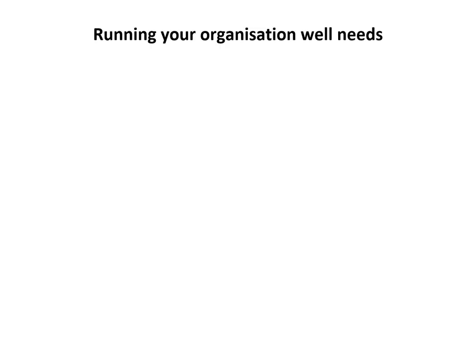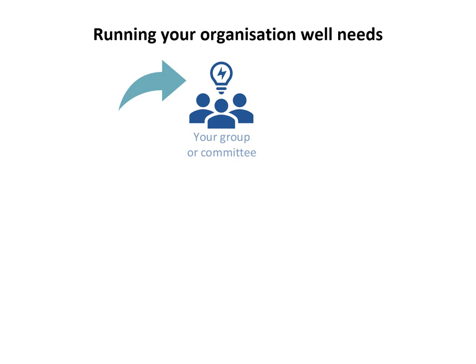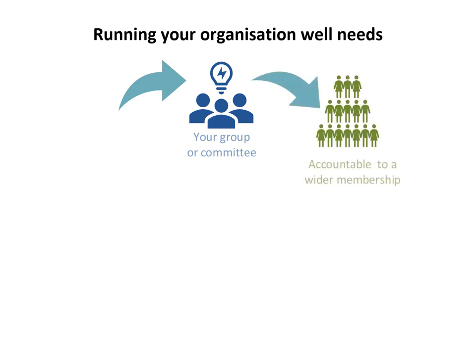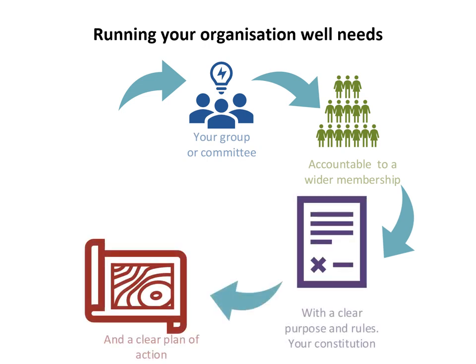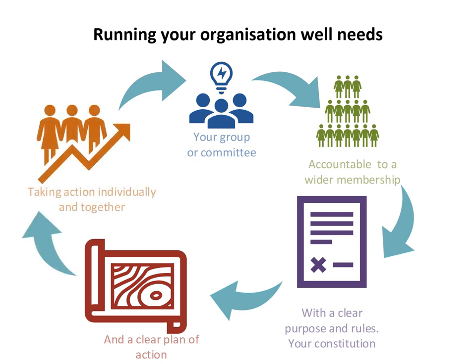In summary, running your organisation well needs a group or committee who are willing to work together to get things done and who are accountable to their wider membership, taking responsibility for their decisions and actions, and enabling dialogue with their community. You'll need a clear purpose, a set of rules, and a clear plan of action — Module 4 can support you to develop this. And lastly, you'll need to agree who and how you'll take that action, either individually or together.